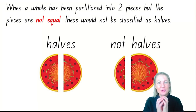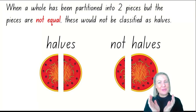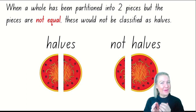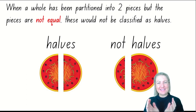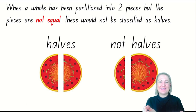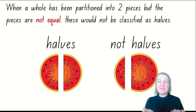When we have one whole object and we split it into two equal parts, these are halves. One of these pieces is called half, and when we're talking about both pieces, we're talking about the word halves — more than one piece. Halves are two equal pieces. Equal means they both need to be the same.